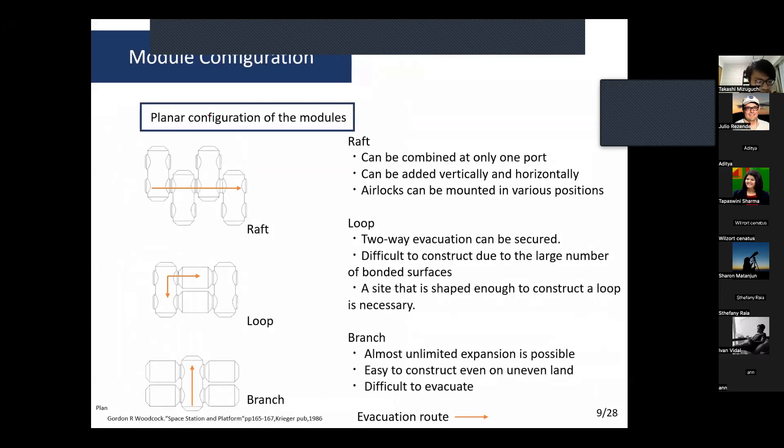In the configuration of modules, they are classified into three types: branch, loop, and plane. Each has advantages and disadvantages. Branch can be connected at only one docking port and can be oriented vertically or horizontally. Loop configuration provides a two-way evacuation route but is difficult to construct due to the fewer number of bounded surfaces. Branch configuration allows almost unlimited expansion and is easy to construct even on uneven land, but evacuation is difficult because the evacuation route is only one-way.